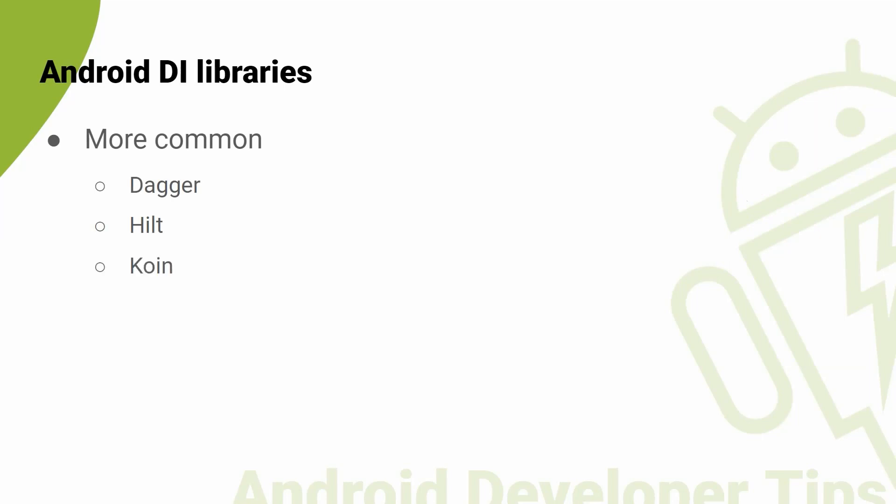And Koin, which is written in pure Kotlin using functional resolution only with no proxy, no code generation, and no reflection — however, they have recently added annotations to this library. Dagger and Hilt are developed by Google and have a steeper learning curve, but Koin is simpler to use and learn. Also, some of the less famous Android DI libraries are Toothpick and Kodein.